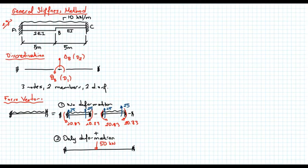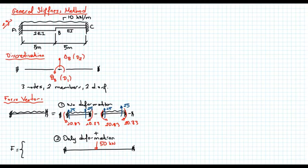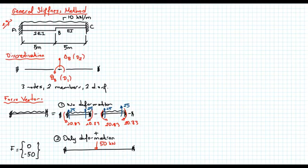The structure should deform in such a way that it generates 50 kN at node B to balance those two unbalanced shear forces. By looking at the second case we determine our force vector. The first degree of freedom is rotation — there is no moment corresponding to it, so it's zero. The second degree of freedom is translation, with positive direction in the plus-y direction. The unbalanced force is in the minus-y direction, so this is minus 50. That is the force vector.